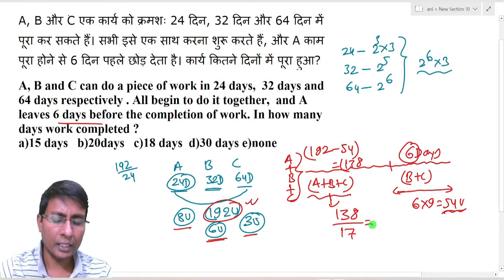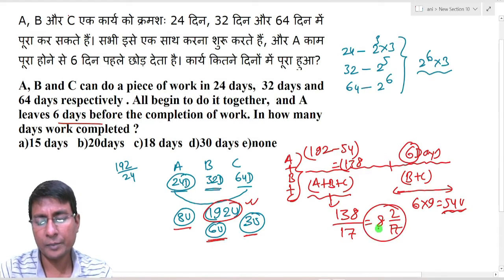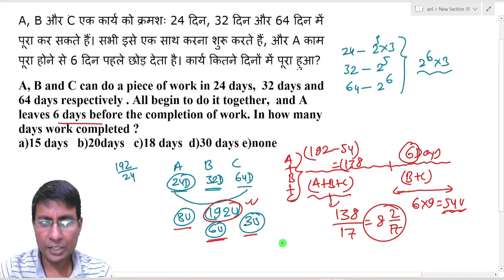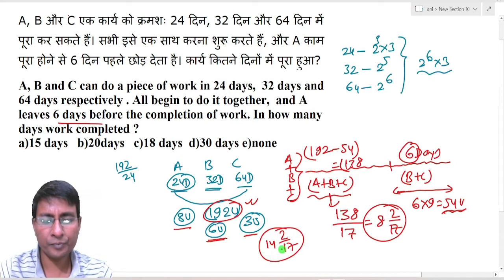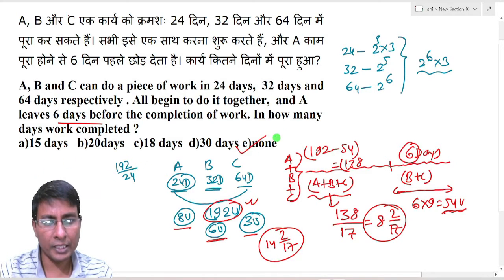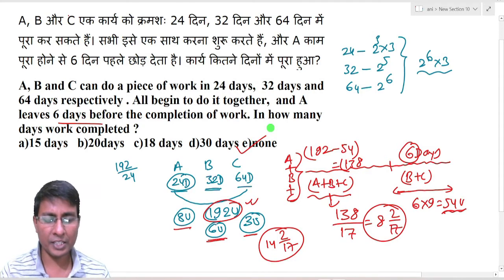17 × 8 = 136, so 138 ÷ 17 = 8 and 2/17 days. Adding the last 6 days, the total days = 8 2/17 + 6 = 14 2/17 days. This is our answer. Since this does not match any of the given options, the answer is option E: None of the above.